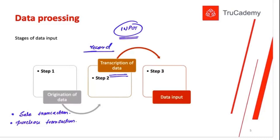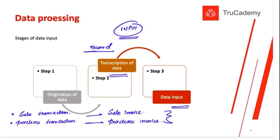How do we transcribe or record the data? For a sale transaction, we immediately produce a sales invoice or receipt. For a purchase transaction, we produce a purchase invoice, purchase order, sales order, and so on. Whenever we produce these documents to record our transactions, this step is called transcription of data. After that, the data input stage involves taking those invoices and inputting them into the system — either manually via keyboard or through automated methods like a barcode reader.